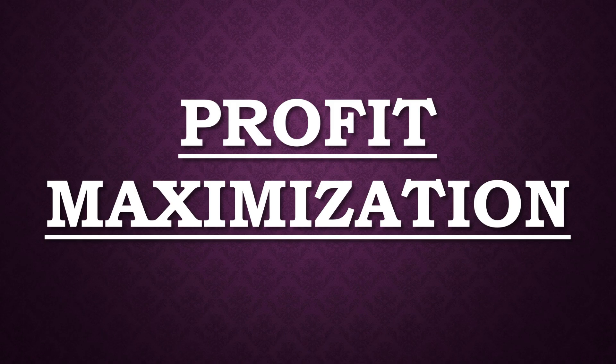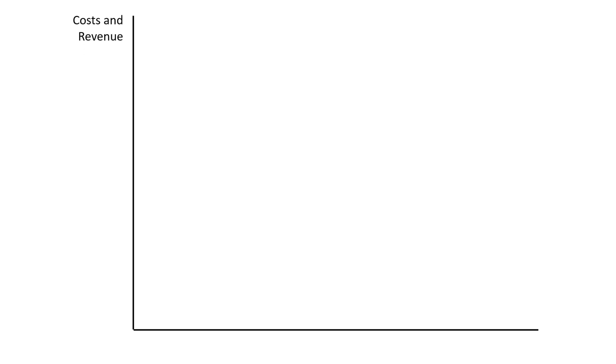Hello students, today's topic is profit maximization in case of monopoly. On the vertical axis we have taken costs and revenue, and on the horizontal axis we have taken quantity, and this is the origin.